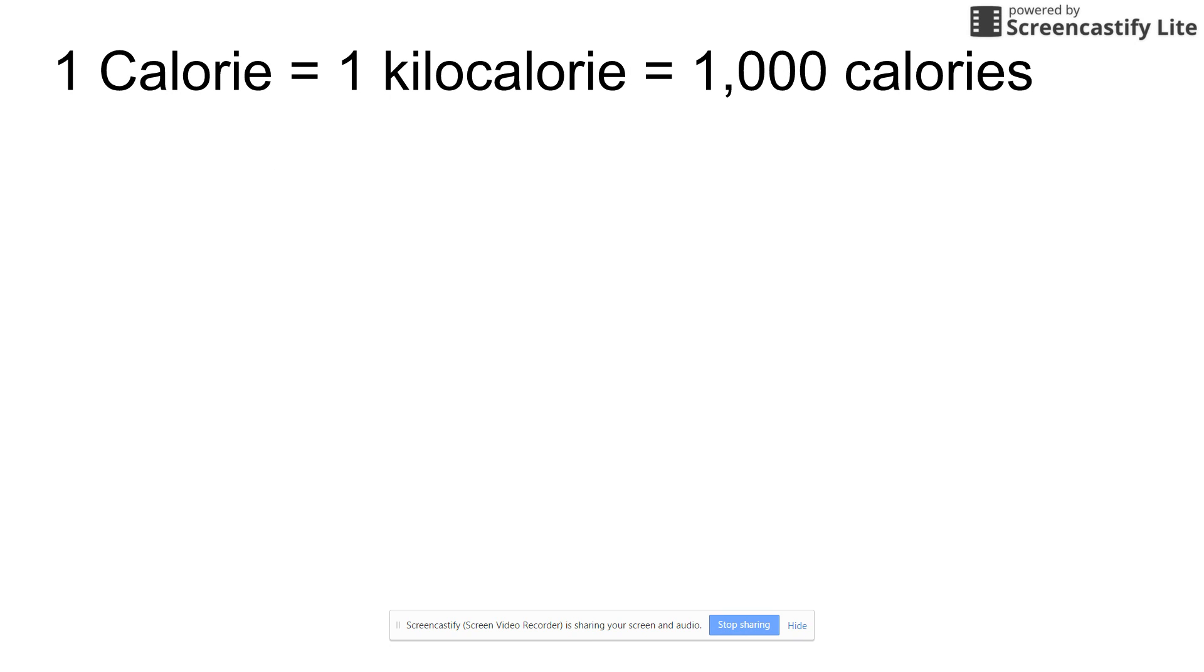There is a difference between uppercase calories and lowercase calories. Uppercase Calories is actually one kilocalorie, which is equal to a thousand lowercase calories. When you go to the store and you look at items, they're actually listed as uppercase Calories, so they're listed as kilocalories. For example, if an item is listed to have seven calories in a serving size, they're talking about seven uppercase Calories or seven kilocalories or 7,000 lowercase calories.